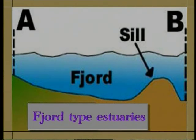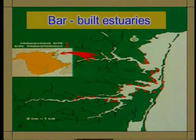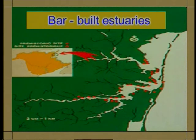A fjord results from glacial scouring and is usually deep with steep sides. A sill or rock bar is situated at the mouth of the fjord, having been deposited there when the glacier receded, forming the estuary. The bar-built estuaries are shallow, fed by more than one river. The tectonically formed estuaries are formed due to faulting or any other tectonic activity induced by the earth, and these exist in different parts of the world.